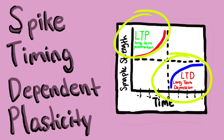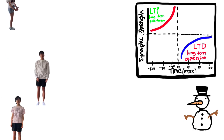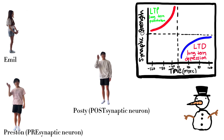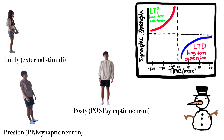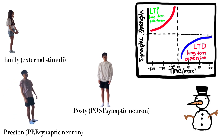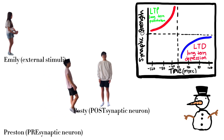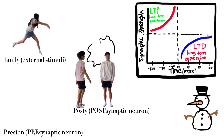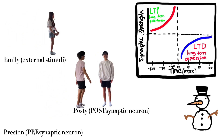What is LTP and LTD on this STDP graph? Imagine a winter setting of three people: Preston, Posty, and Emily. Let's say that Preston wants to go talk to Posty, and so Preston approaches Posty, but then Emily — the external stimuli — throws a snowball right before Preston grabs Posty's attention.